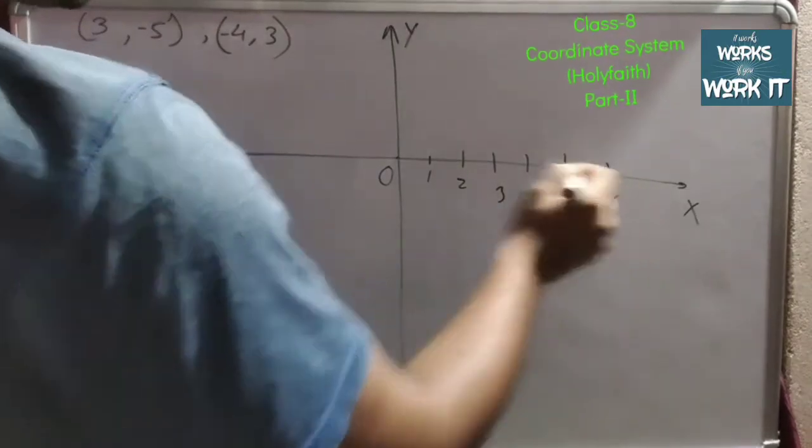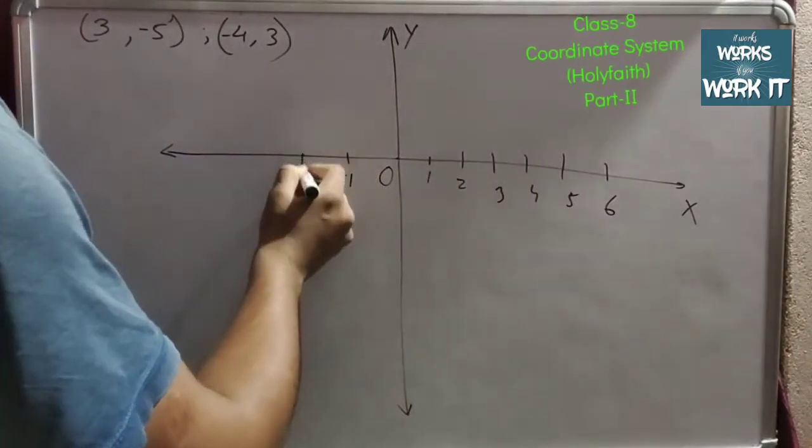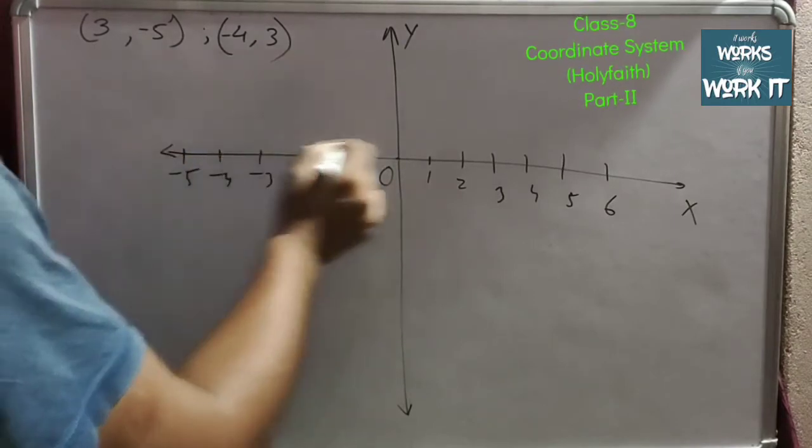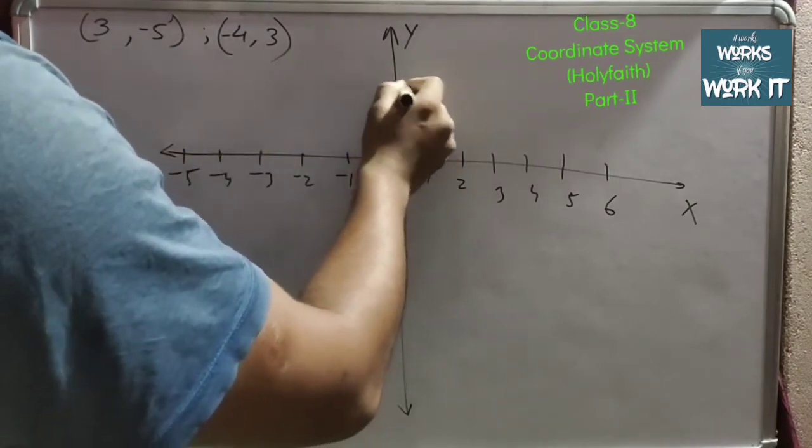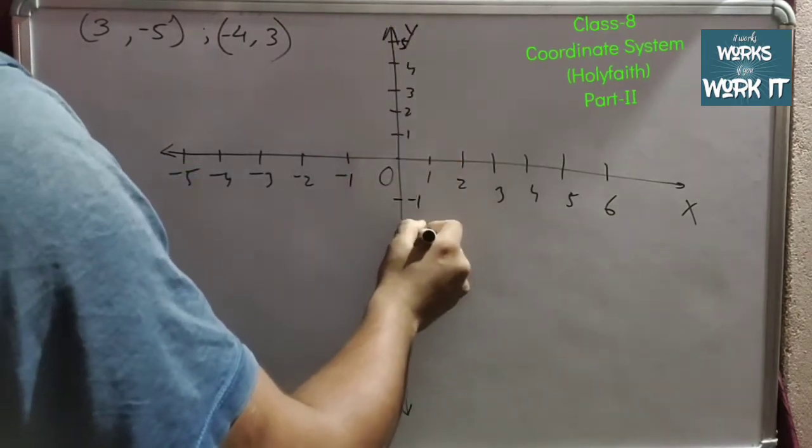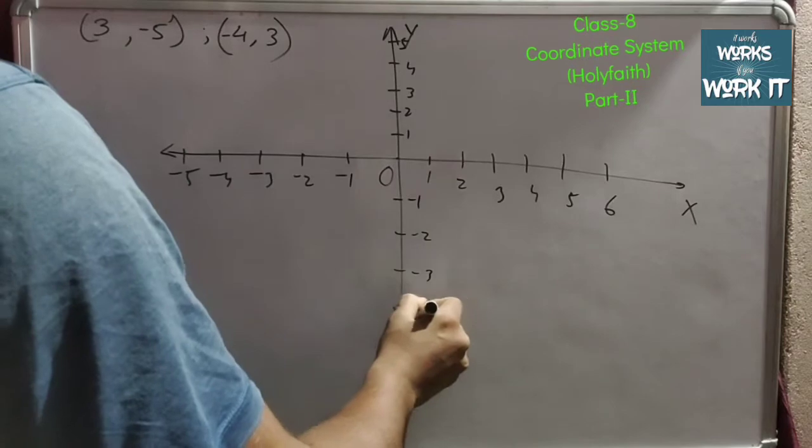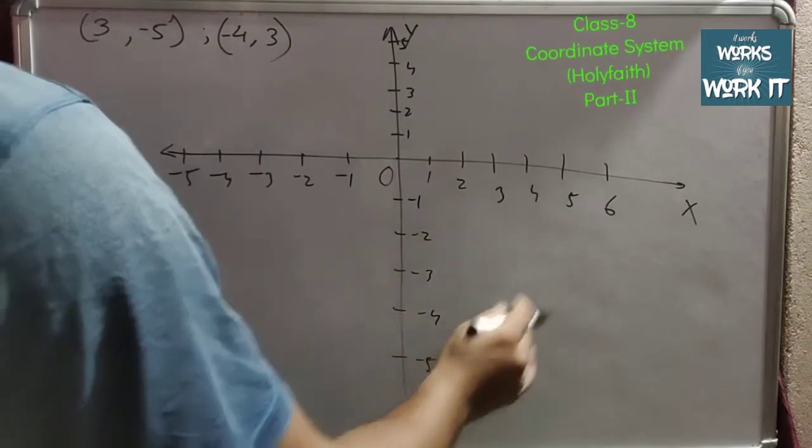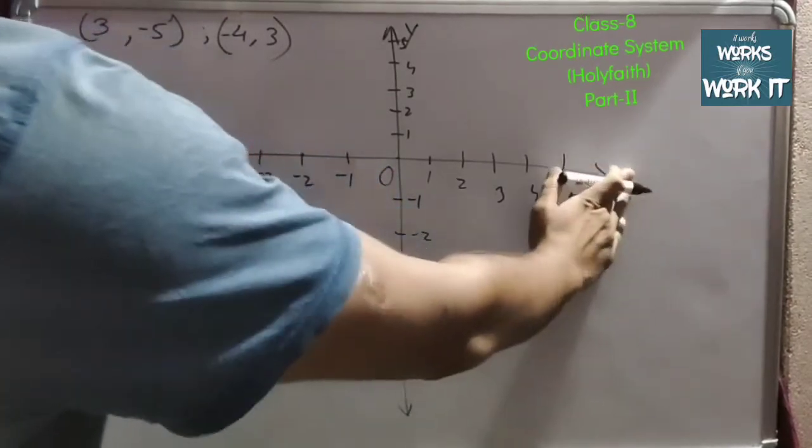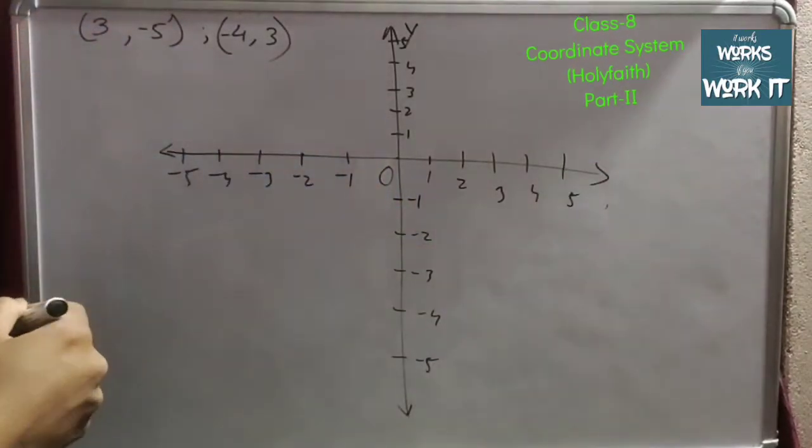4, 5, 6. Here it will be negative. Here it will be 1, 2, 3, 4, 5. Here minus 1, minus 2, minus 3, minus 4, minus 5. Now we will be using the points to locate in the Cartesian plane.